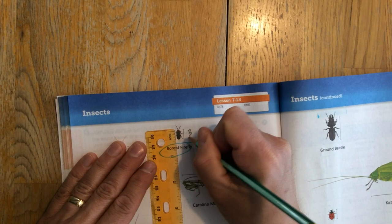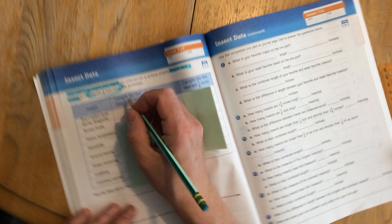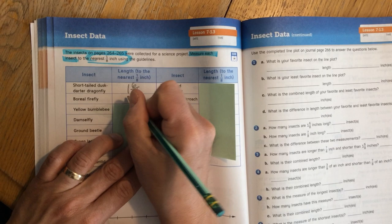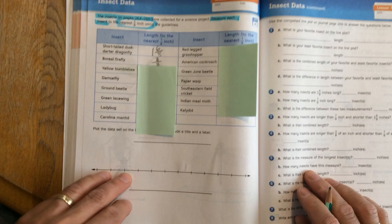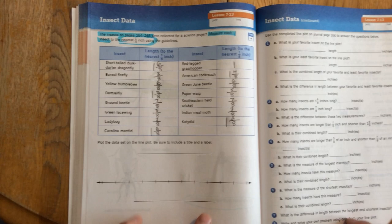Okay, so now that I have those measurements, I'm going to write those into my table right here. So the short-tailed dusk darter dragonfly was one and six-eighths, and the boreal firefly was just three-eighths. Okay, now you will do that for each and every insect. Now to save us some time, I went ahead and did the rest of the measurements because we're going to use all this data to create a line plot graph.